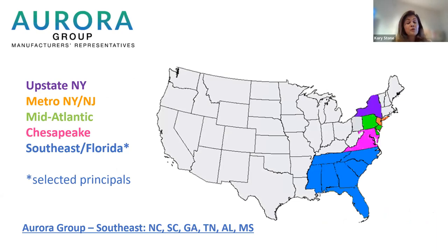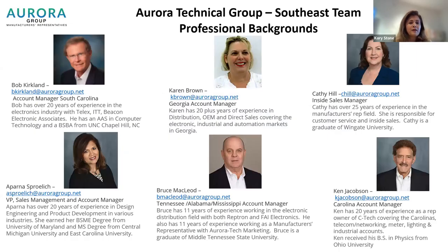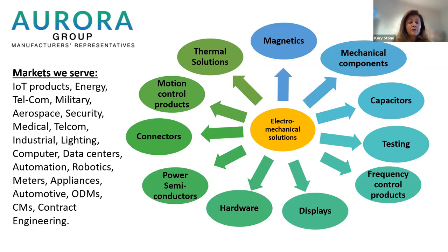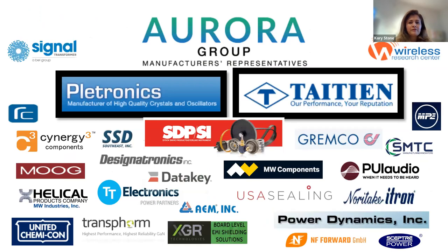We advise on electronic and mechanical components from quality manufacturers, guide through technical challenges, and help with supply liaison quotes, order sampling, and expediting. We cover what's formally called the Dixie States: North Carolina, South Carolina, Georgia, Tennessee, Alabama, Mississippi, and sometimes Florida. We're headquartered in Raleigh. Bob covers South Carolina, Karen covers Georgia, Bruce covers Tennessee, Alabama, and Mississippi, and Ken and I both split North Carolina. The best person to reach us is Kathy Hill, our expert sales manager. You can see all of our lines highlighted — Plantronics and Tai Chiang are the highlight for today.